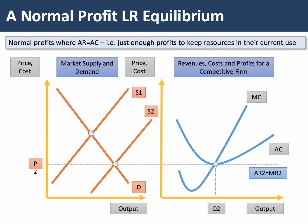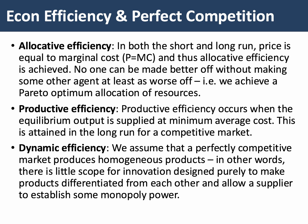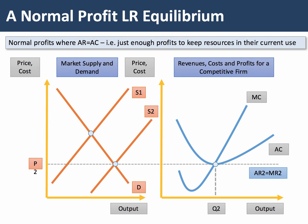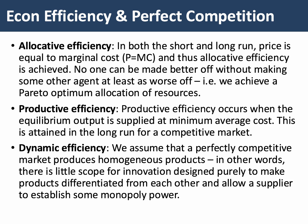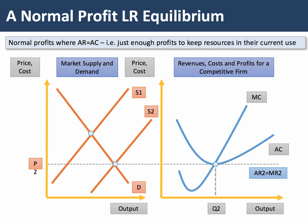The market is also productively efficient because output Q2 is supplied at minimum average cost — Q2 is the lowest point of the representative firm's average cost curve. However, dynamic efficiency is open to question. In a perfectly competitive market firms are producing homogenous goods, meaning there's little scope for innovation designed to differentiate products and make a profit. Technology spillovers are immediately available to all firms, so this market is productively and allocatively efficient but not necessarily dynamically efficient.